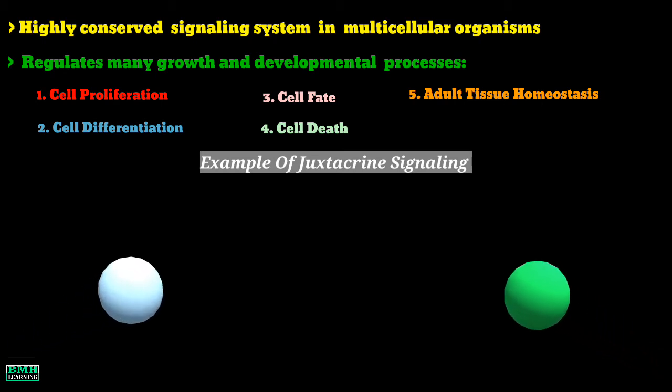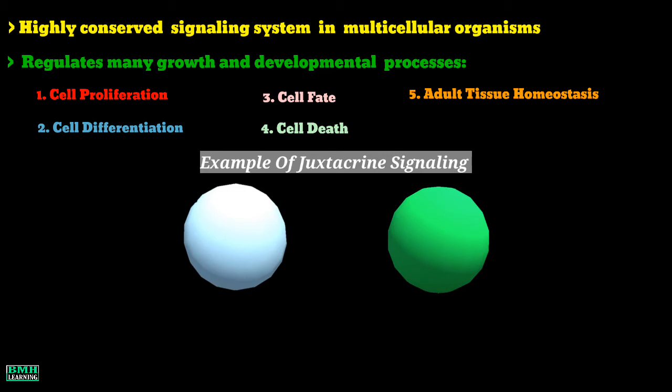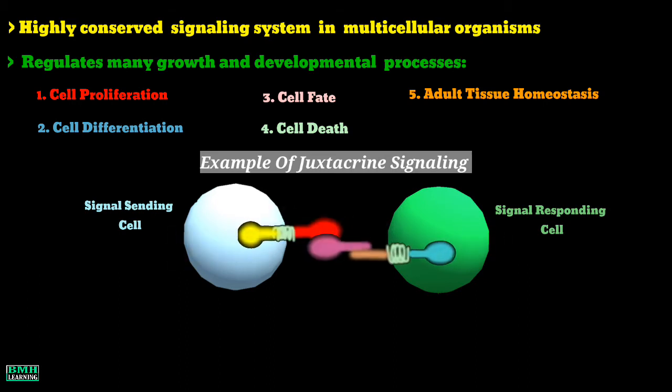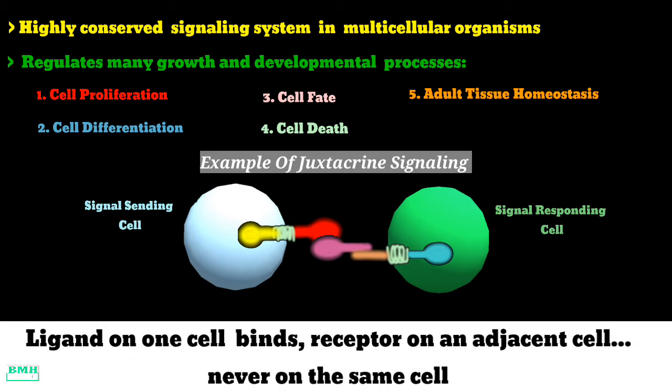That means there would be two directly interacting cells. One of these would be the signal sending cell and the second would be the signal responding cell. Cells would be affected through ligand and receptor crosstalk happening between two cells. One thing to be noted here: ligand on one cell always binds to the receptor on an adjacent cell. Ligand-receptor crosstalk would never occur on the same cell.